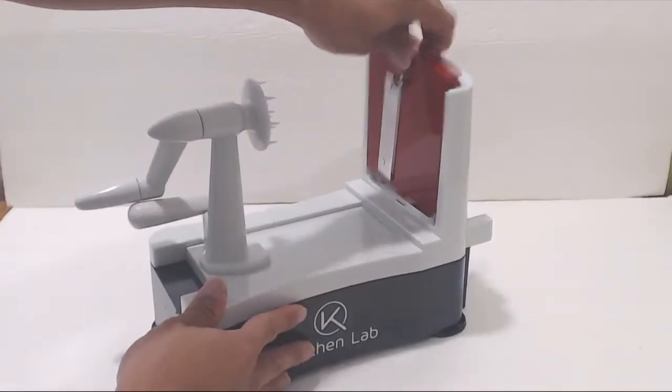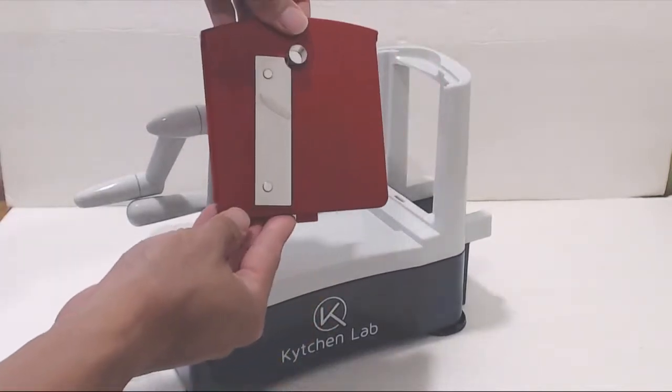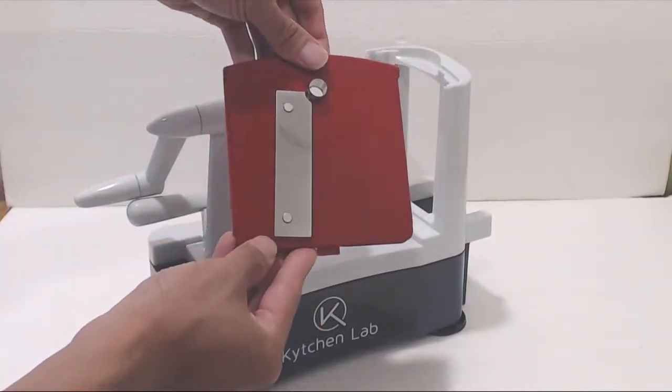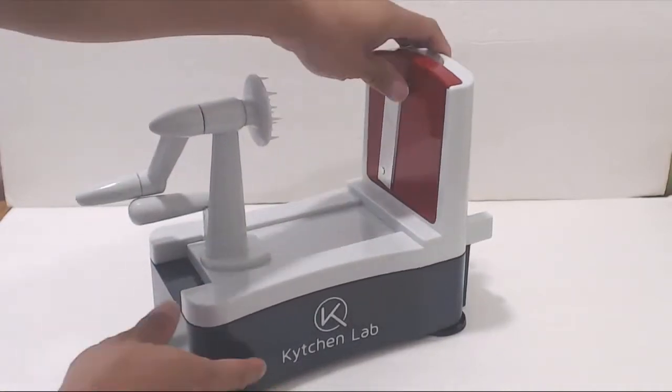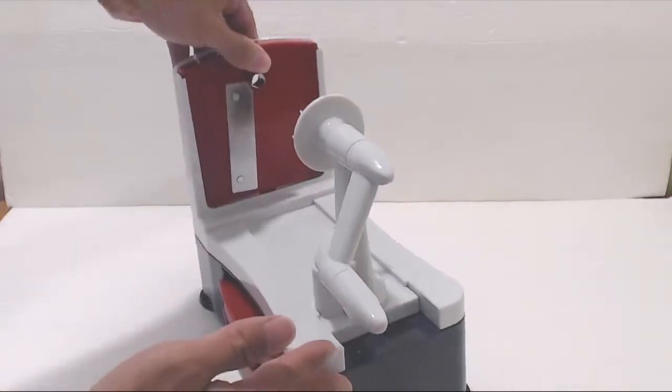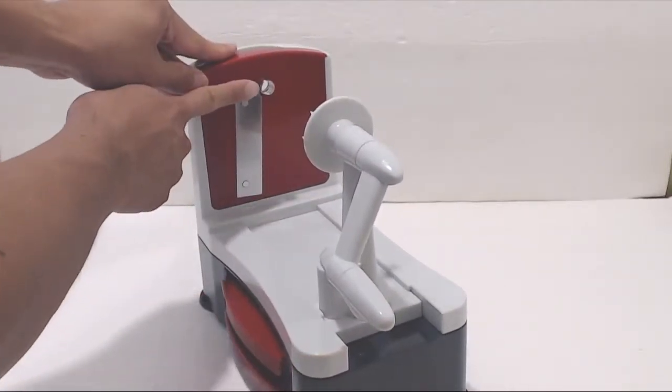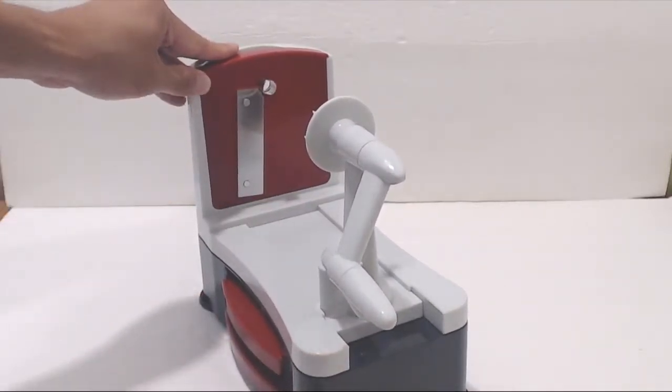On the other side you have the blade plate, which is interchangeable, and you receive three of them. The one that's currently installed is the ribbon cutter. This will cut one long ribbon that looks kind of like a slinky or a spring, which is great for ribbon fries or rounds like apple chips. The circular piece in the middle is the corer for removing cores in fruits like apples.